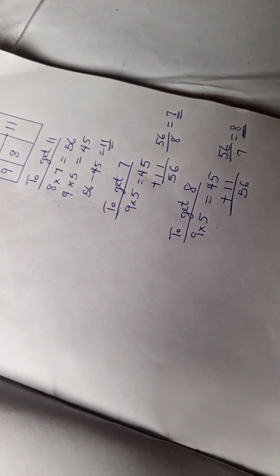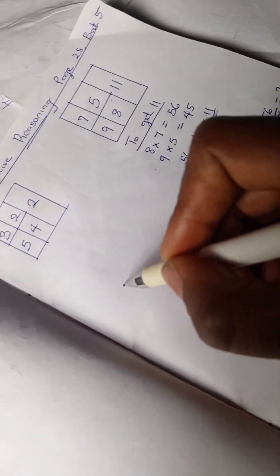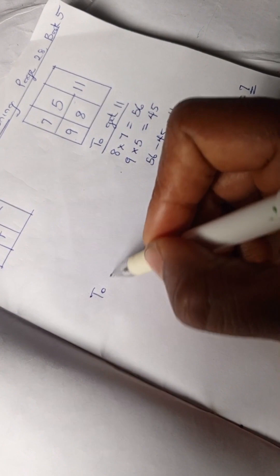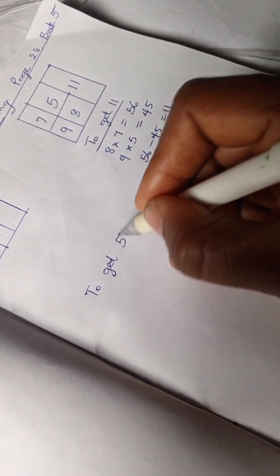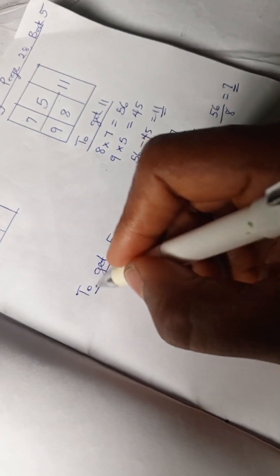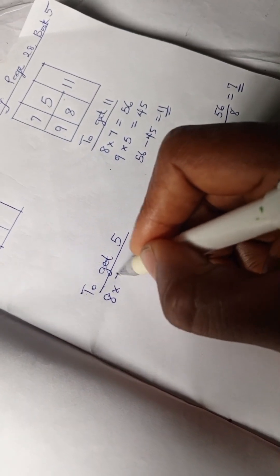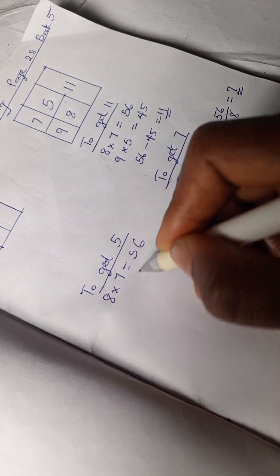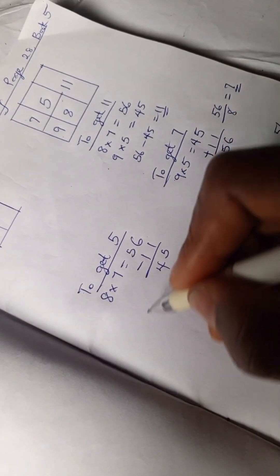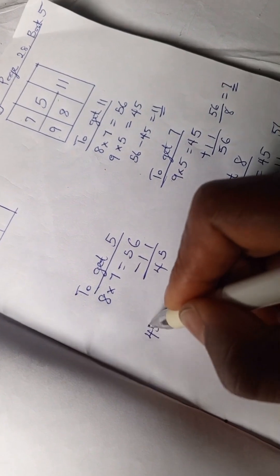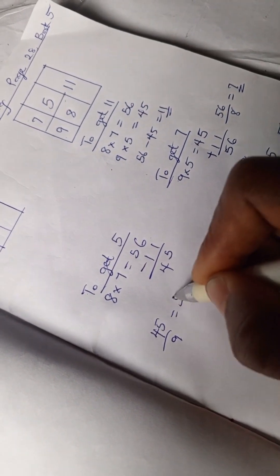We're done with these two, so let's work with this. We can do this here. To get 5, we have 8 times 7 is 56, so 56 minus 11 is 45. So 45 divided by 9 is 5.